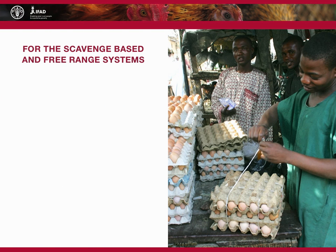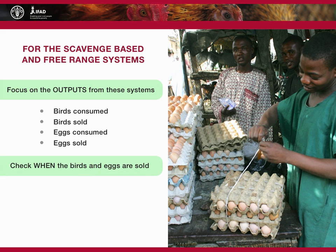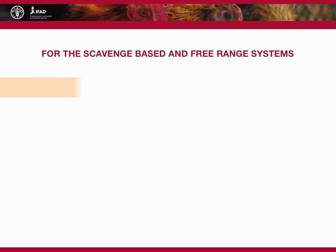For scavenge-based and free-range systems, focus on outputs such as birds consumed, birds sold, eggs consumed, and eggs sold. Check when the birds and eggs are sold to understand seasonality, where they are sold, and find out if any feed and health inputs are being purchased.